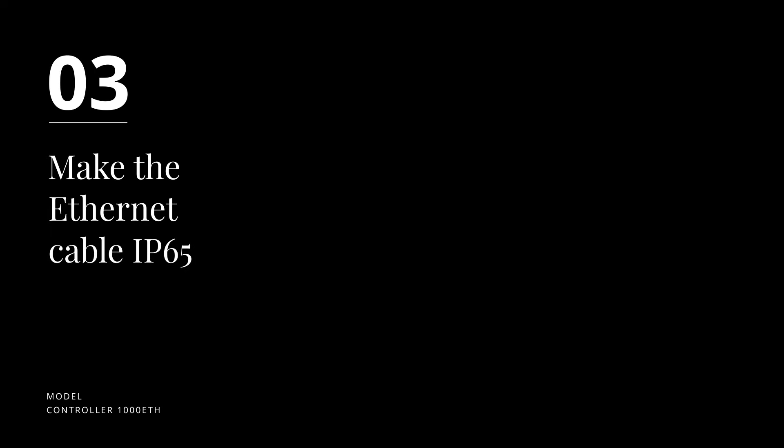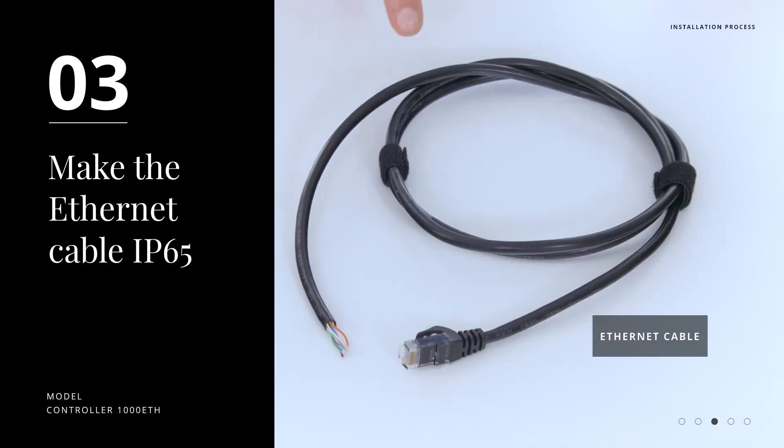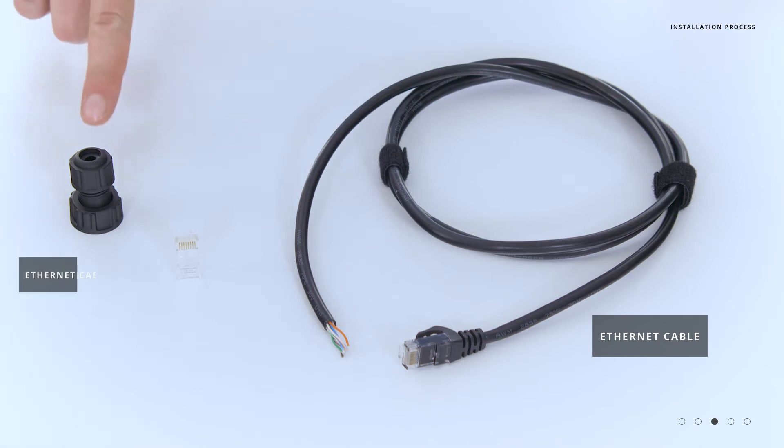Step three, making the ethernet cable gland. You will need the ethernet cable, the IP65 cable gland, and an RJ45 connector.